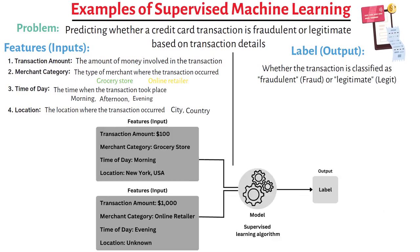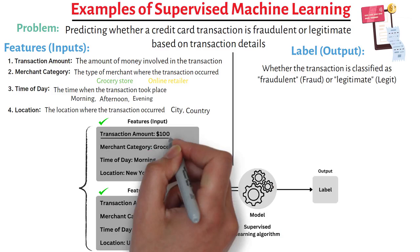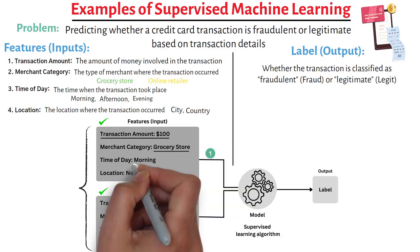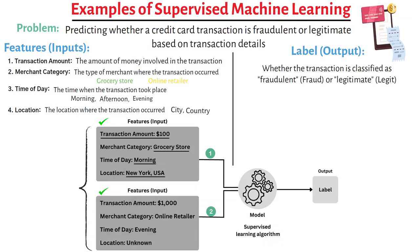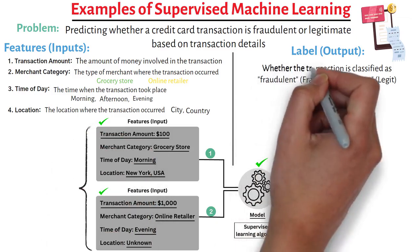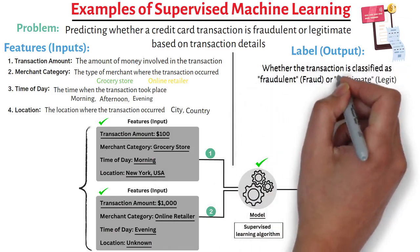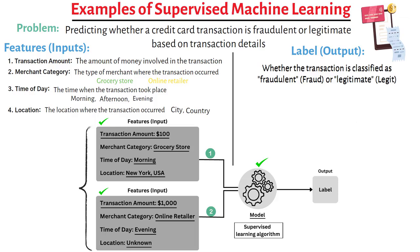Here's a diagram to illustrate this. On the left side, we have two examples of transaction features — inputs. The first transaction has a relatively small amount, is from a grocery store, occurred in the morning, and took place in New York, USA. The second transaction has a larger amount, is from an online retailer, occurred in the evening, and the location is unknown. In the middle, we have the model — our supervised learning algorithm. It takes these transaction details as input and learns to predict whether the transaction is classified as fraudulent (fraud) or legitimate (legit) based on the transaction features.